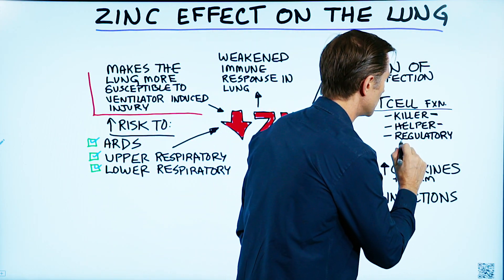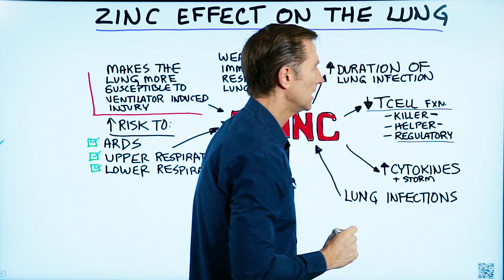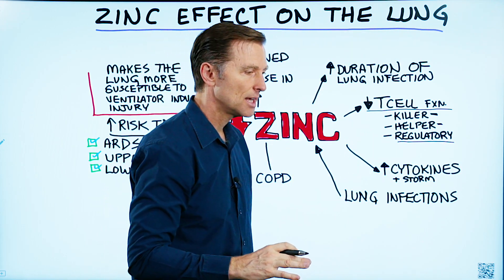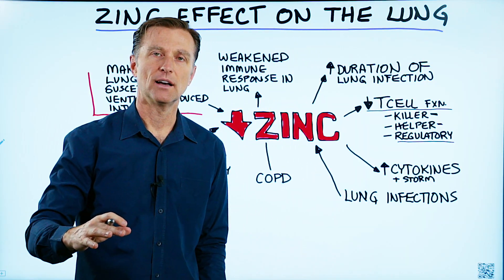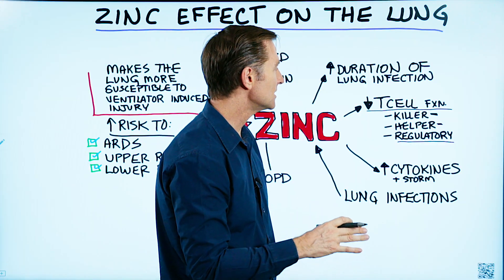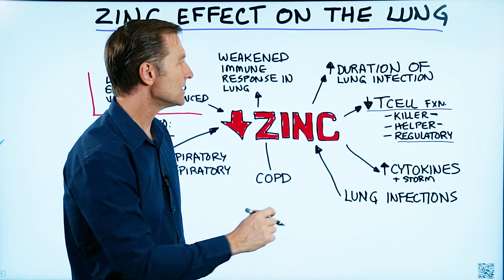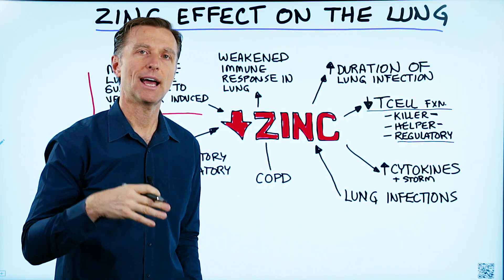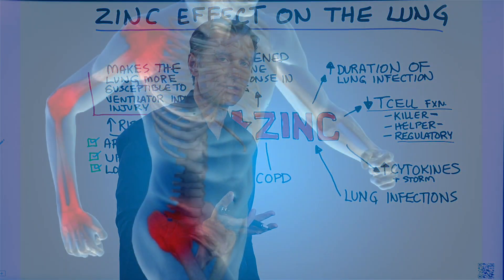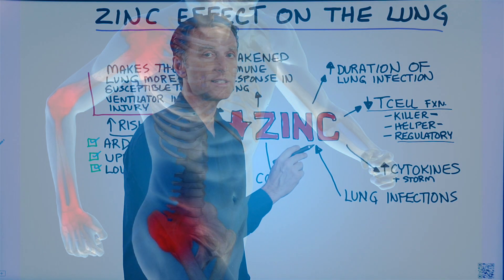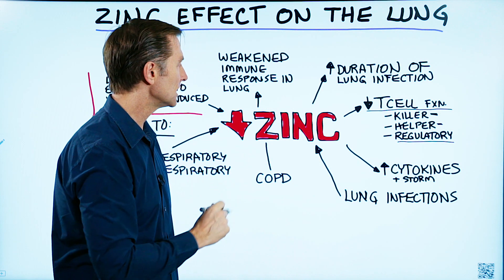Then you have another T-cell called the regulatory T-cell. What this cell does is it suppresses the overreaction of the immune system and also prevents autoimmune diseases. If this cell is weak, you'll have a tendency to have asthma, allergies, and even excessive inflammation that seems to linger and goes into a chronic phase. Your T-cells really need zinc.